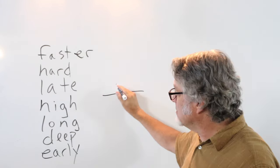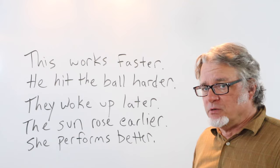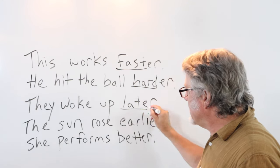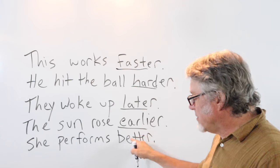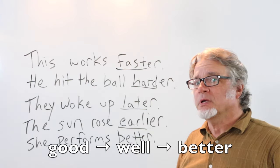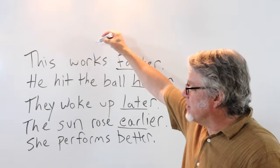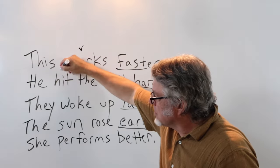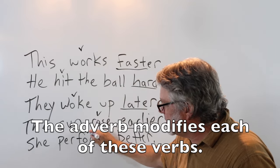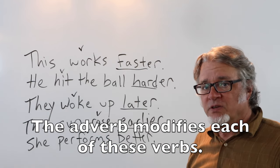All of these could be used in modifying the verb, whatever that might be. All of these sentences are using irregular adverbs: fast, hard, late, early. And this is for the adjective good, which as an adverb becomes better. Here are the verbs and the adverb modifies each of these verbs, each of these activities.